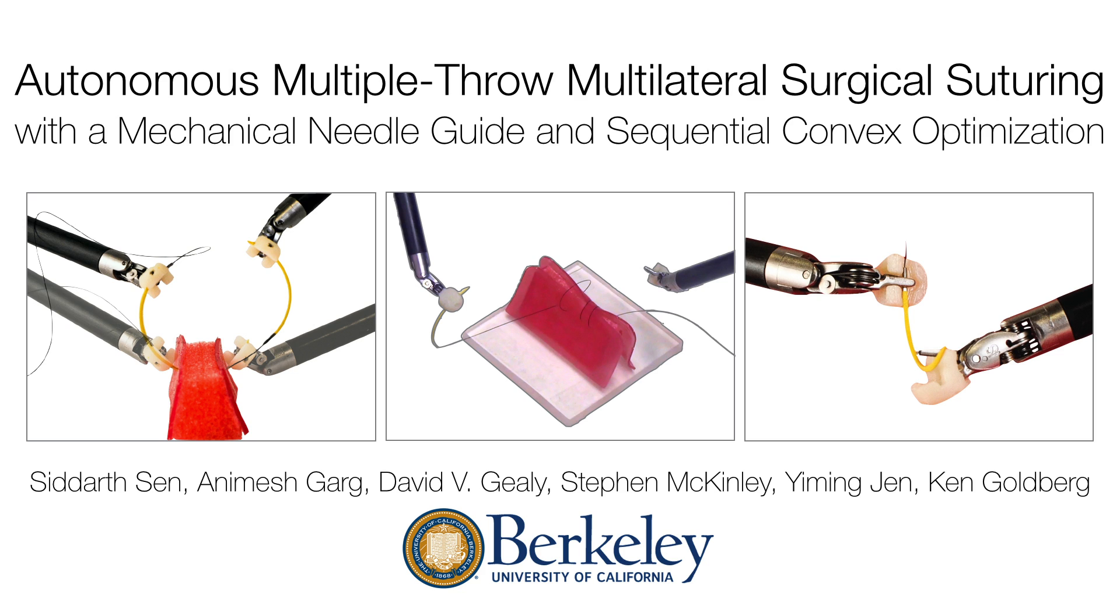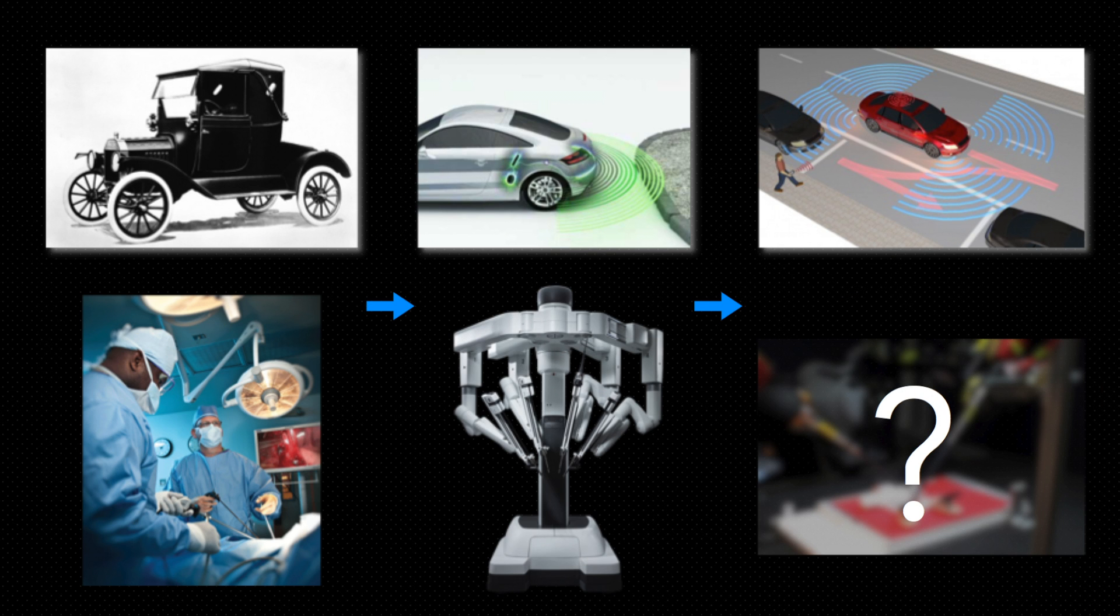We are investigating autonomous multi-throw suturing with the DaVinci Surgical Robot. In the same way that human drivers can benefit from the automation of well-defined and tedious subtasks such as parallel parking and driving on open freeways, surgeons can also benefit from the automation of surgical subtasks such as suturing. While suturing is ubiquitous in surgery, it remains a tedious and time-consuming subtask.